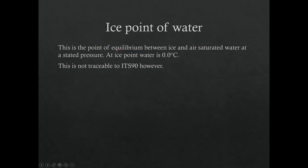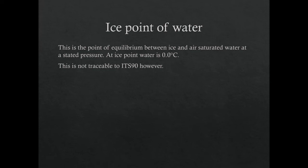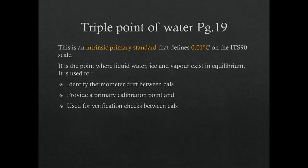The ice point of water is similar but technically between ice and air-saturated water at a state of pressure — close to zero but not quite. The triple point at 0.01°C is actually the primary reference per ITS-90, while the ice point is stated at 0.0°C and is not traceable to ITS-90. The triple point involves all three states simultaneously, which is likely why it is the defined standard.